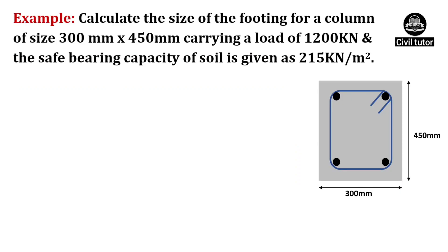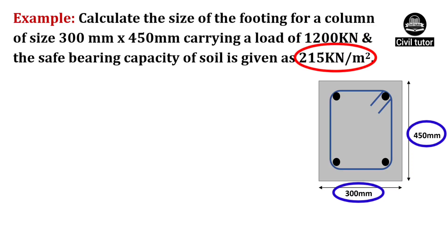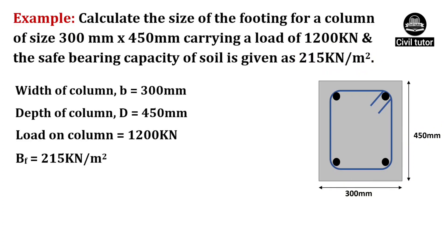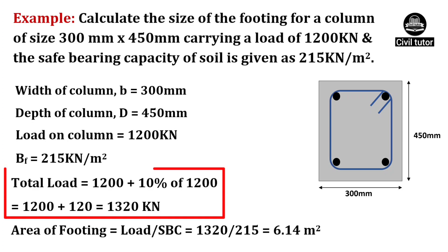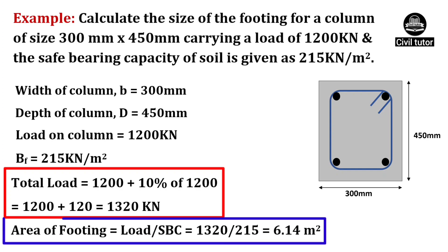Let's quote one more example to make it more clear. Suppose we need to calculate the size of the footing for a column of size 300 mm × 450 mm, which is carrying a load of 1200 kN and the safe bearing capacity of soil is given as 215 kN per meter square. As per IS code, we need to add 10% extra load. So, the total load will be equal to 1200 plus 10% of 1200, which will be equal to 1320 kN. The area of footing will be equal to load divided by bearing capacity, which will be equal to 1320/215 = 6.14 m².